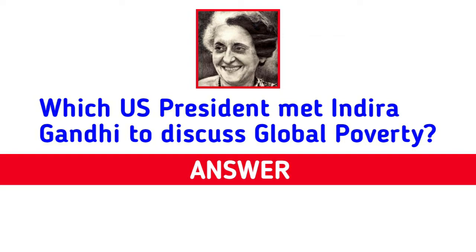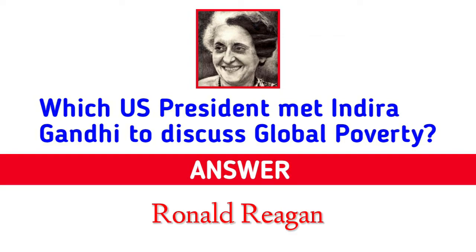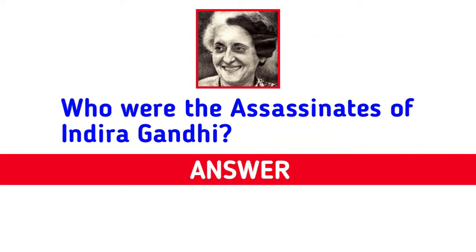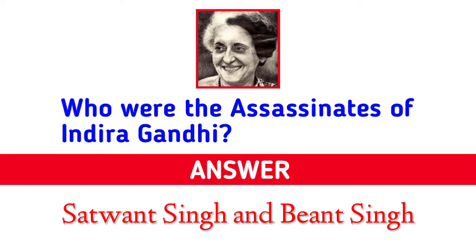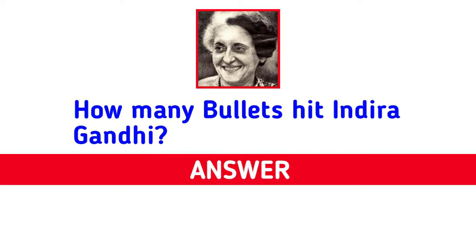Which US president met Indira Gandhi to discuss global poverty? Answer: Ronald Reagan. Who were the assassins of Indira Gandhi? Answer: Satwant Singh and Biant Singh. How many bullets hit Indira Gandhi? Answer: 30 bullets.